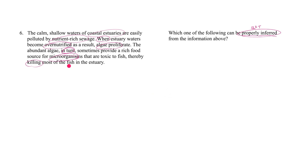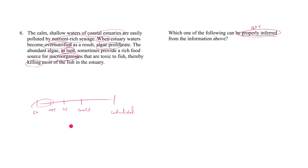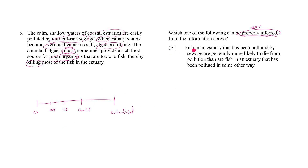Take all of this to be true and let's look at the answers. We're going to try to place each answer along the spectrum. Because we're doing a must-be-true question, the correct answer choice has to fall on the must-be-true end of the spectrum. Answer A says: fish in an estuary that has been polluted by sewage are generally more likely to die from pollution than fish in an estuary that has been polluted in some other way.